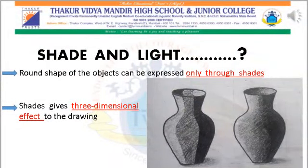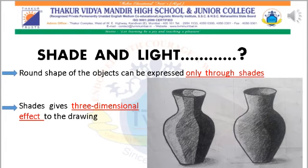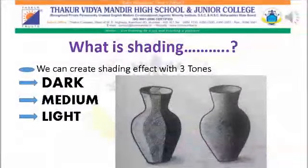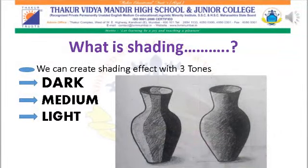Before coloring, we will learn what shade is. The round shape of an object can be expressed only through shades, and shades also give a three-dimensional effect. Students, what is shading? You can show shade and light effect with three tones: dark, medium, and light. Color every object using light, medium, and dark tone.